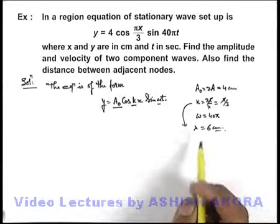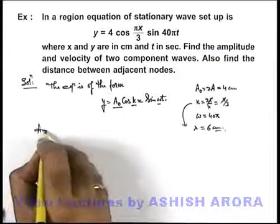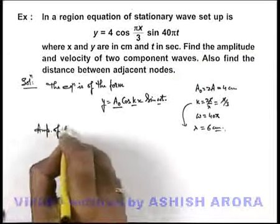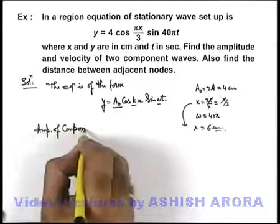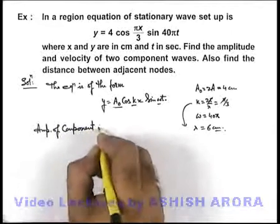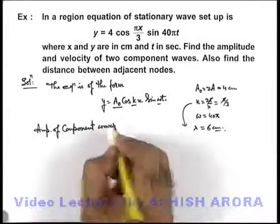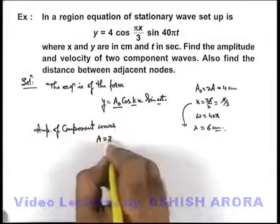Now, if we are required to find the amplitude of the component waves, we can directly get the amplitude of component waves. This can be given as A = A₀/2 = 2 centimeters.